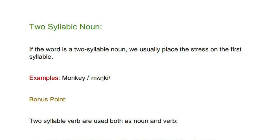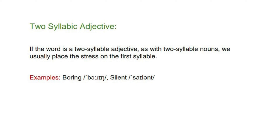Two-syllable nouns: if the word is a two-syllable noun, we usually place the stress on the first syllable — examples: 'monkey', 'bonus'. Two-syllable words used as both noun and verb: if used as a noun, the first syllable is stressed — example: 'permit'. If used as a verb, the second syllable is stressed — example: 'permit'. Two-syllable adjectives: as with two-syllable nouns, we usually place the stress on the first syllable — examples: 'boring', 'silent'.